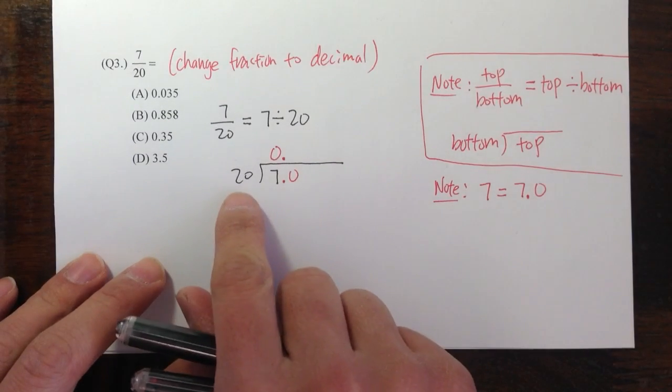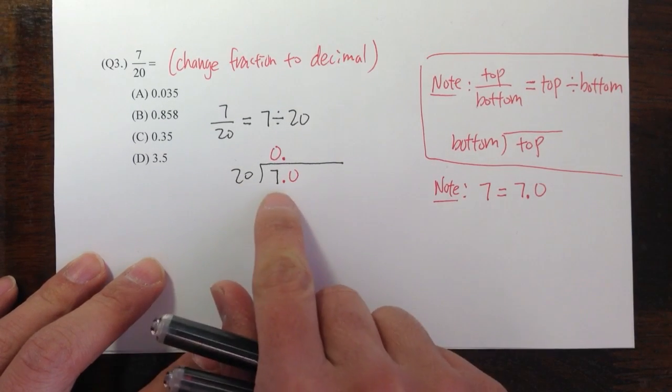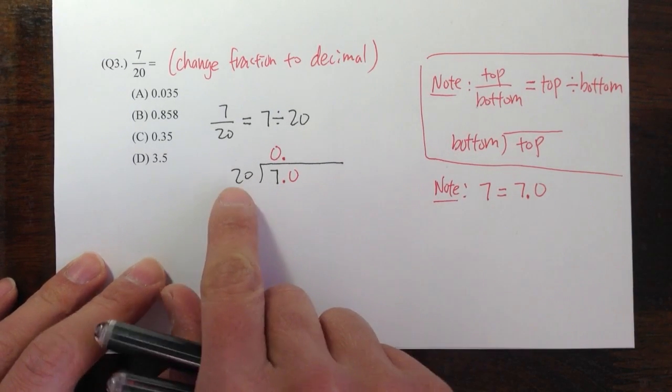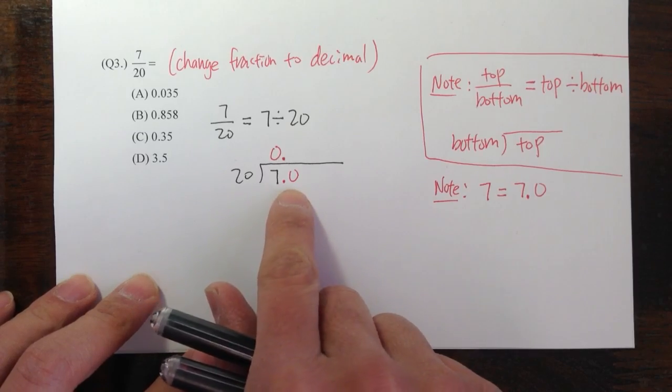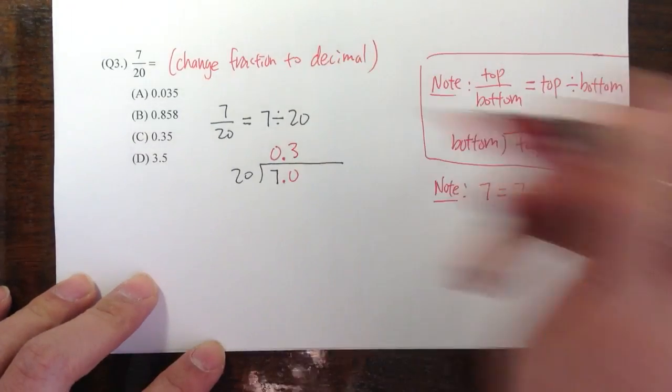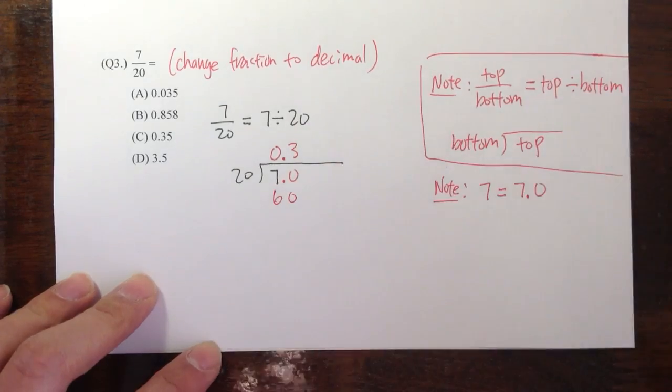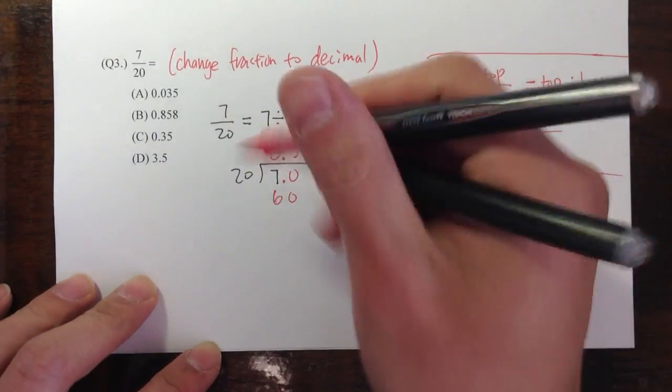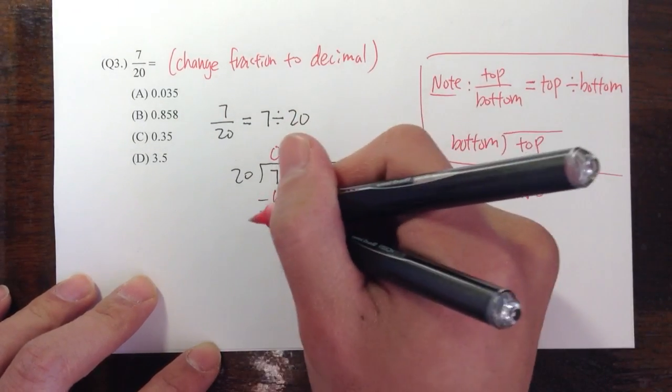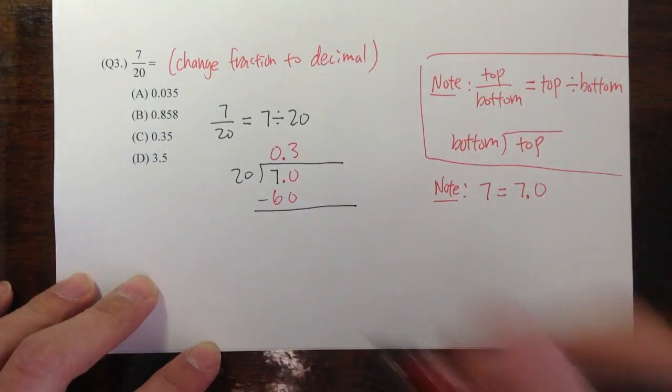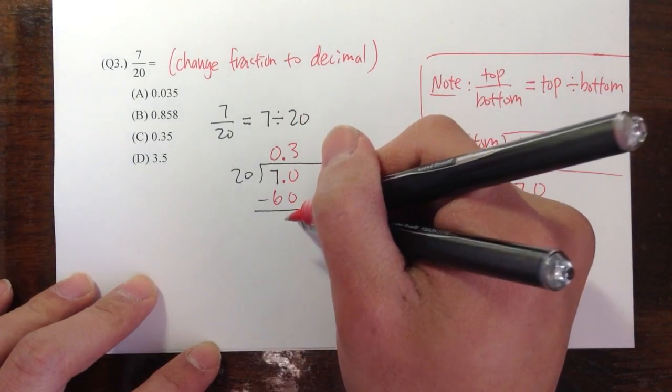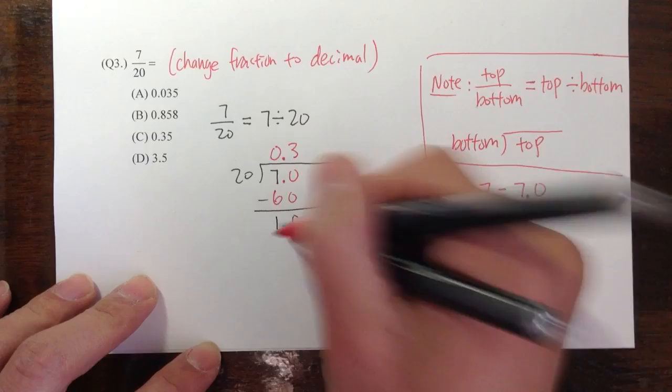Now, we can look at this question as 20 and 70. 20 goes into 70 three times. Put the three right there. Three times 20, we get 60. And to do long division, you subtract. So zero minus zero is zero. Seven minus six is one.